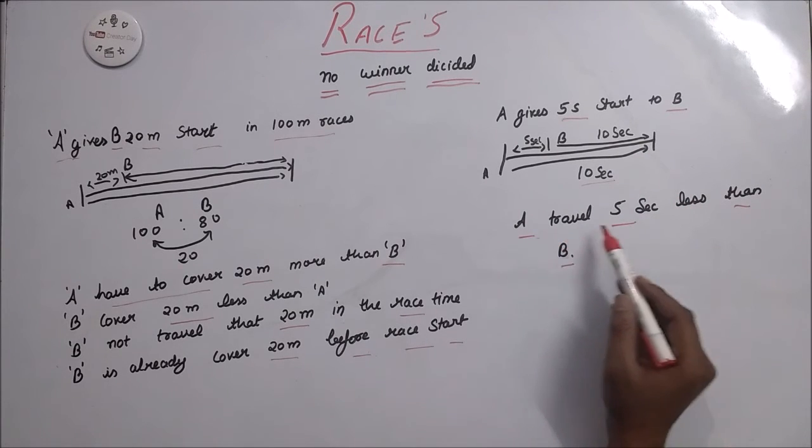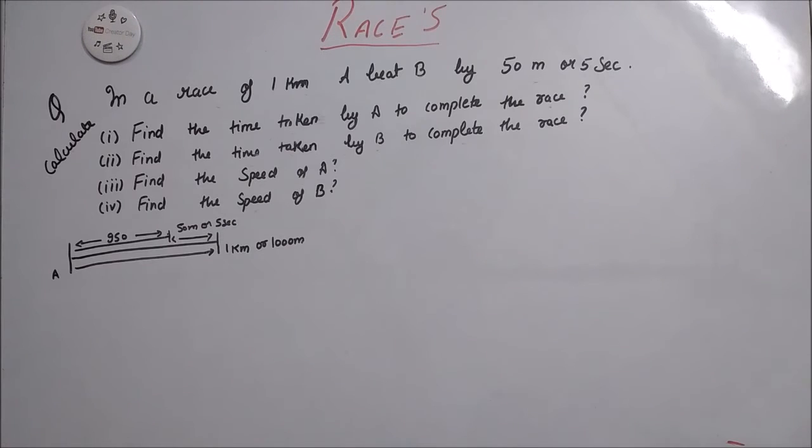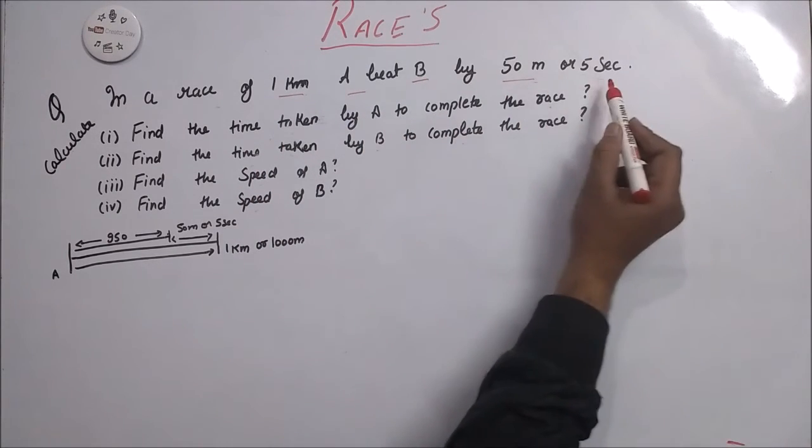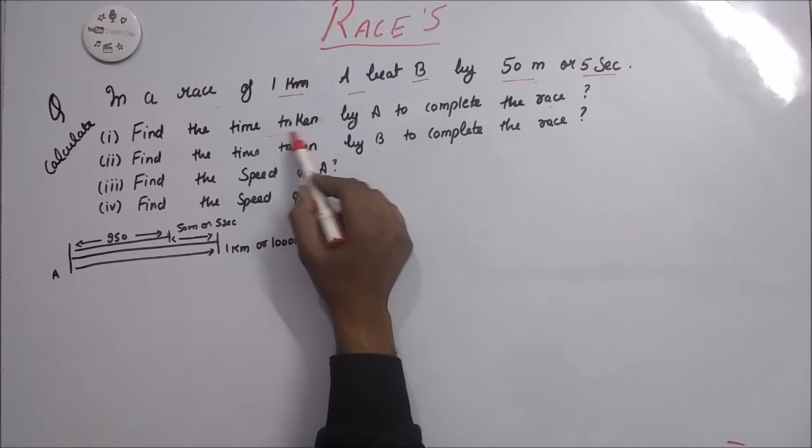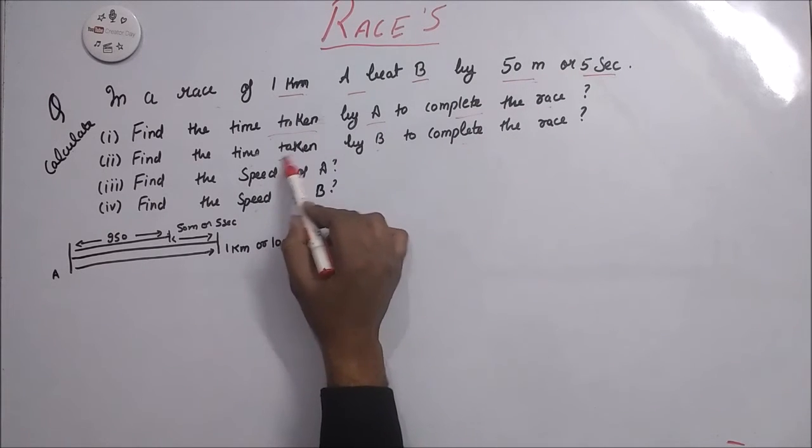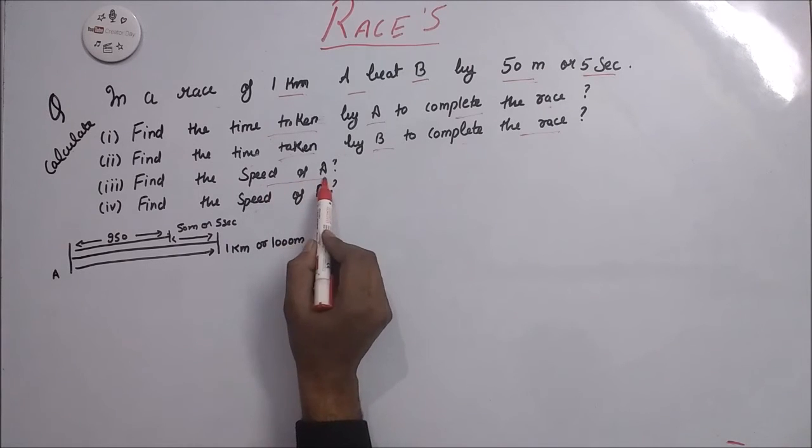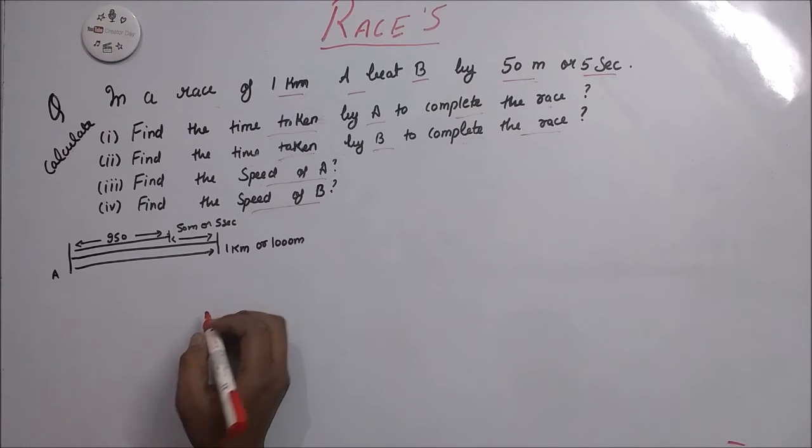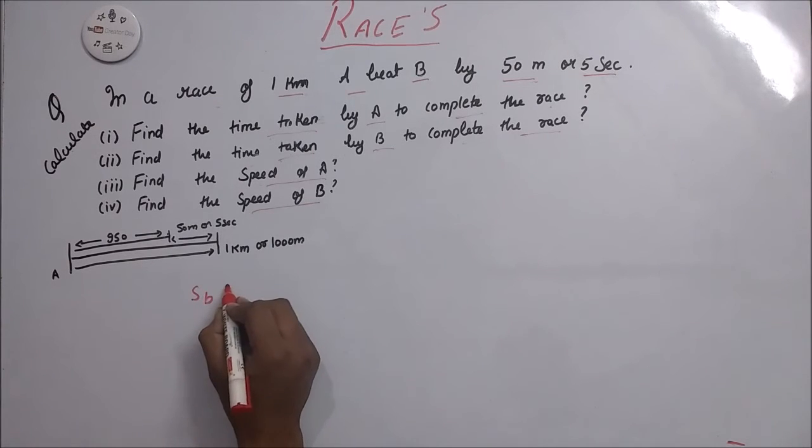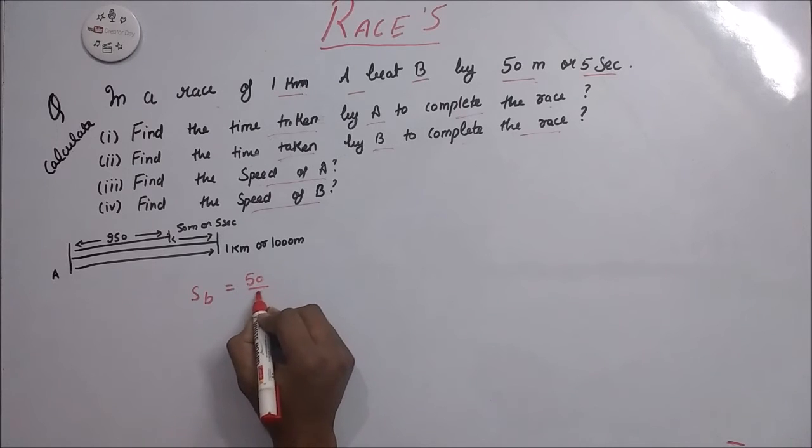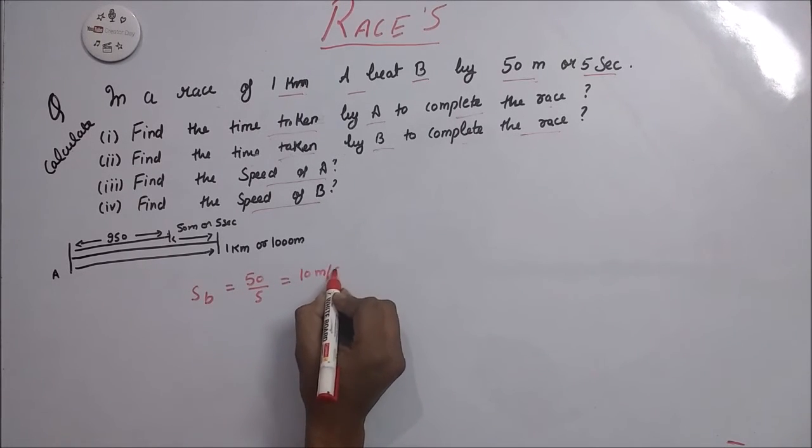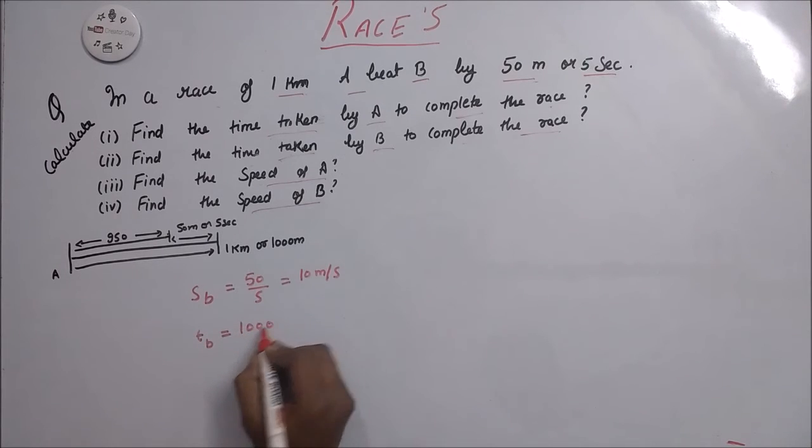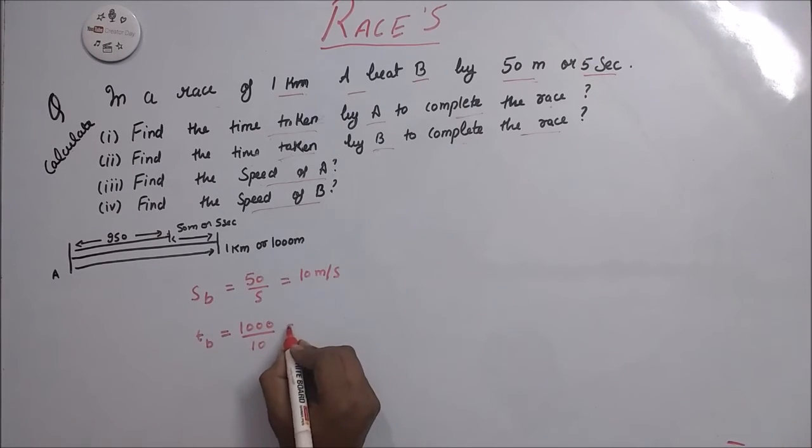Now here is the question. In a race of 1 km, A beats B by 50m or 5 seconds. And we need to calculate time taken by A to complete the race, time taken by B to complete the race, speed of A and speed of B. If we go through the third concept in which we calculate speed of B by 50 divided by 5, that is 10 meters per second. Now time taken to travel 1000m by B is 100 seconds.